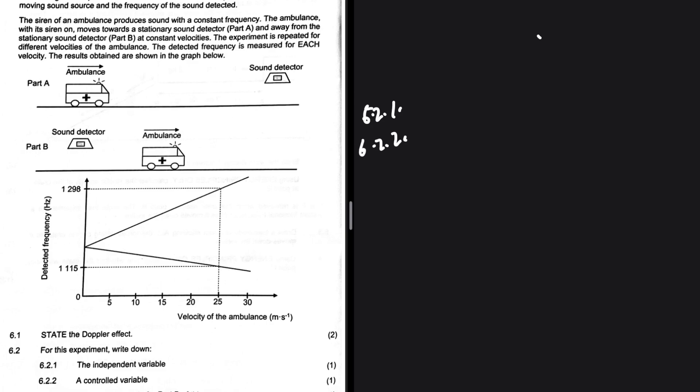For 6.2.2, a controlled variable: by definition, a controlled variable is what you keep the same when conducting an experiment. That's what makes your various tests fair. In the question statement, the control variable is given as well — if you read the statement carefully, you should be able to see it.